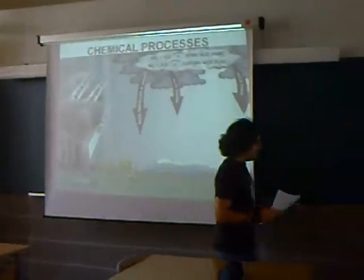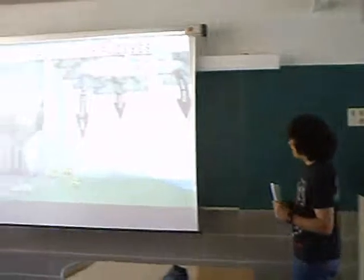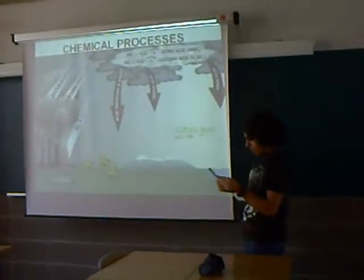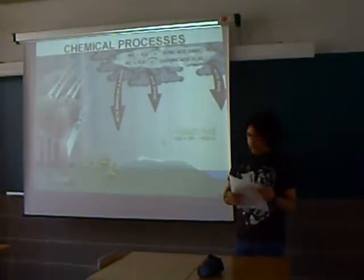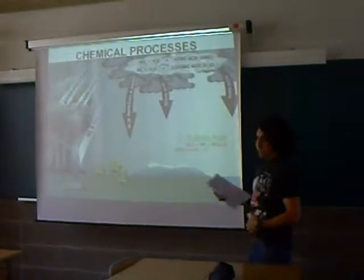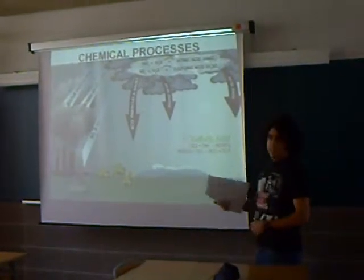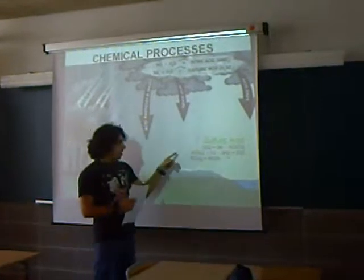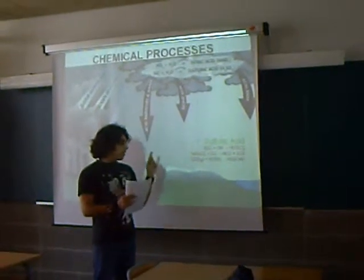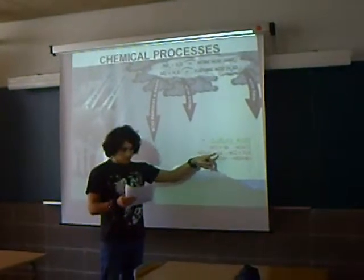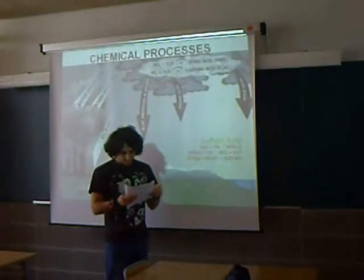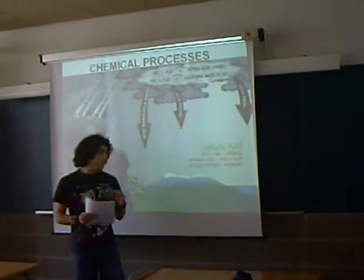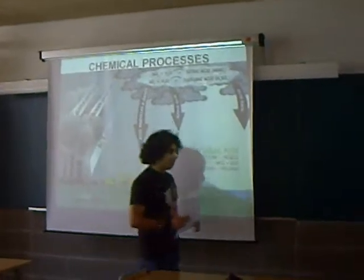We can see a reaction: sulfuric acid is formed by sulfur dioxide plus OH, and we get HO-SO2, and acid sulfuric in a catalytic step. That acid sulfuric converts with oxygen and gives HO and SO3. Then, very quickly, it converts with water to produce sulfuric acid.